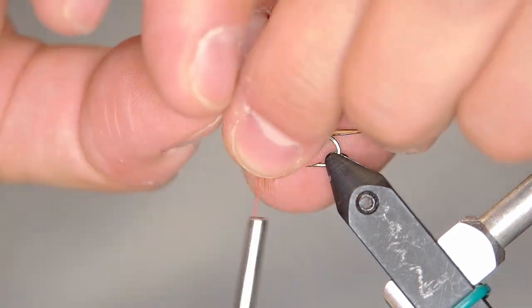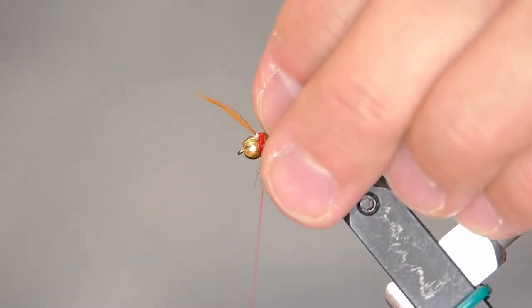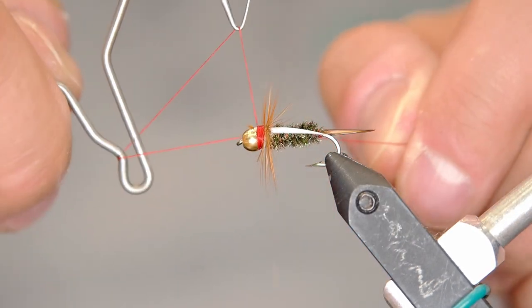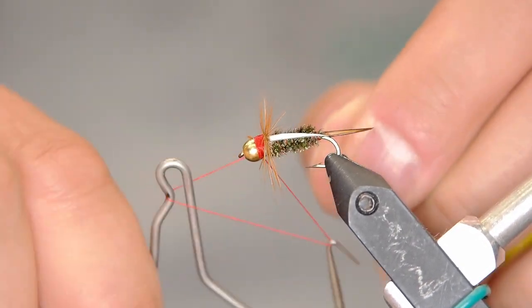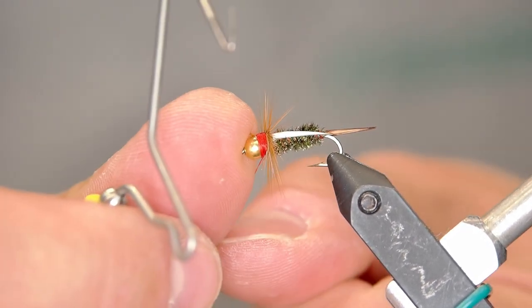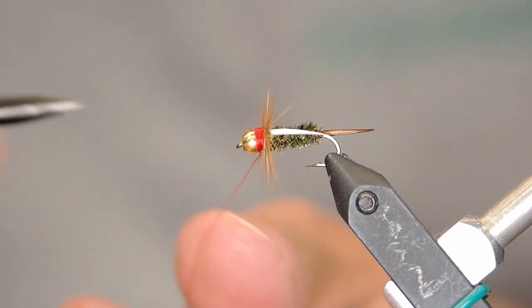You know the Prince Nymph is a classic nymph but it's also very effective and I know when I first started as a beginner I thought it was a silly looking fly. I didn't use it. It doesn't look like a bug that you'd see in the water but as I've become more experienced I've actually gone back to using it and find it's very effective. It attracts fish. They just seem to love it.